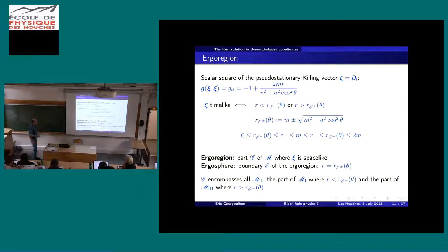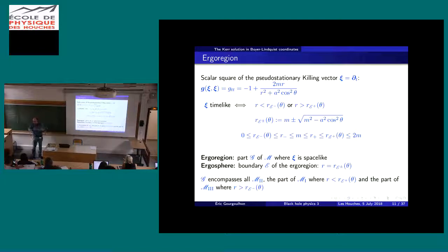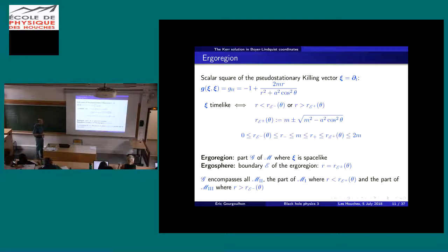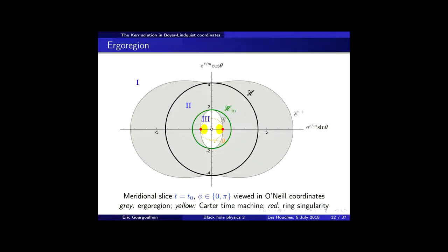By definition, we will call the ergoregion the part of spacetime where xi is space-like. The ergosphere, also by definition, will be the boundary of this region. The ergosphere is the region between these two surfaces, and it encompasses part of region 2. Let me discuss more on this meridional plot of the Kerr spacetime.